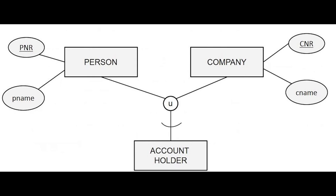The second concept added in EER is categorization, represented in a circle with U for union. Categorization is basically a subclass with multiple superclasses. Instead of a superclass having multiple subclasses like in specialization, categorization is the opposite — it allows a subclass to belong to multiple superclasses. Subclasses will inherit the attributes and relationships of the superclasses they belong to. Categorization can be either partial or total, where partial means not all entities belong to the subclasses, and total means all superclass entities belong to the subclasses.